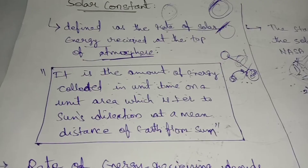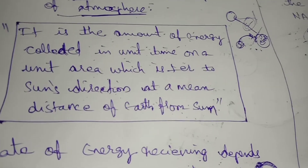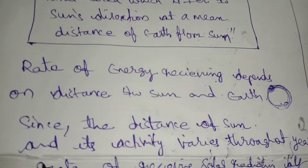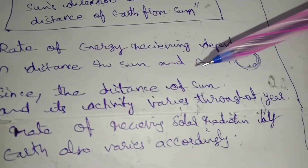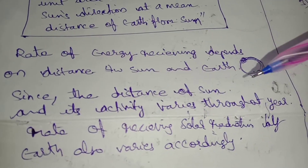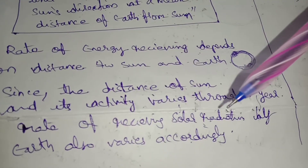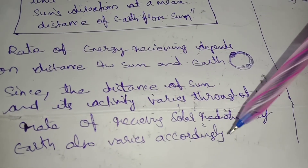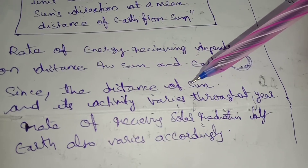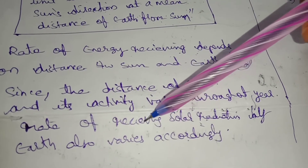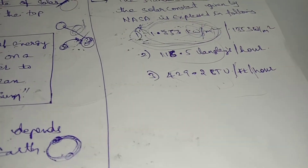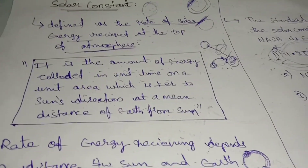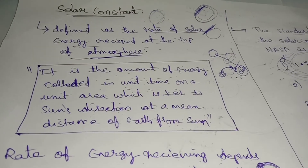The solar constant is the amount of energy collected in unit time on a unit area which is perpendicular to the sun's direction at a mean distance of Earth from the sun. The rate of energy receiving depends on the distance between Earth and sun — the distance and its activity vary throughout the year, so the rate of receiving solar radiation varies accordingly. In the next video, we will cover the terrestrial and extraterrestrial topic.